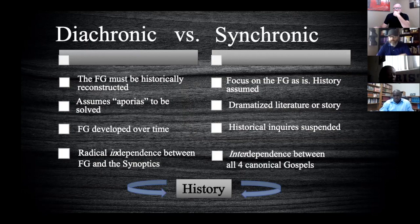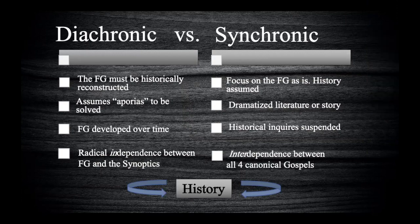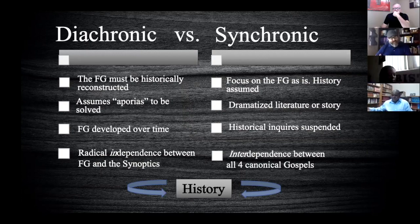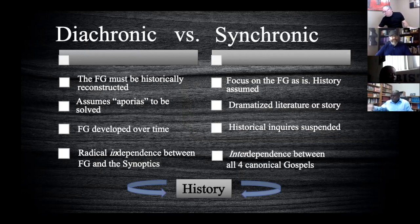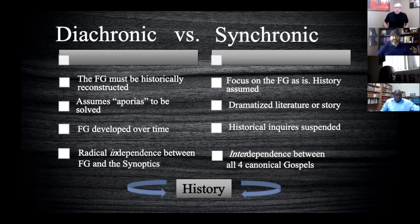Another example is the famous pericope of the woman caught in adultery, which disrupts the flow of the text. Another example is the epilogue — the Gospel seems to end in John 20:31 with the purpose statement, yet there's a whole other chapter after it. Liberal or critical scholars see those things and label them aporias, meaning inconsistencies — sort of cut-and-paste pieces of evidence of people who have redacted the Gospel.